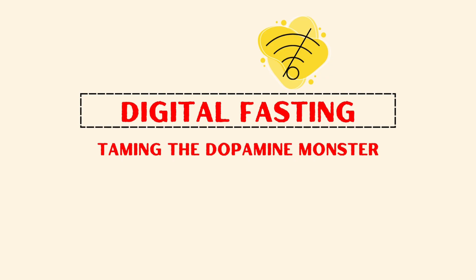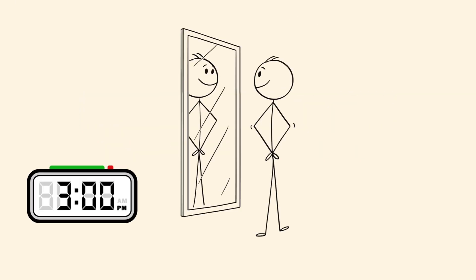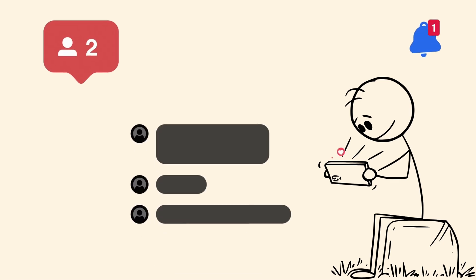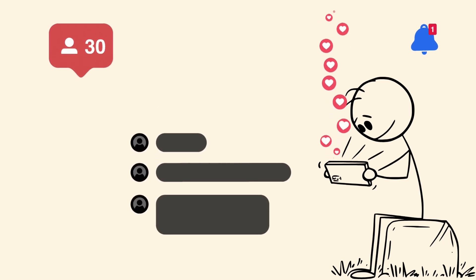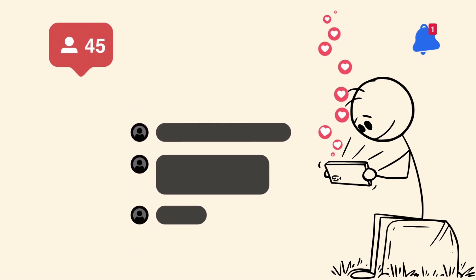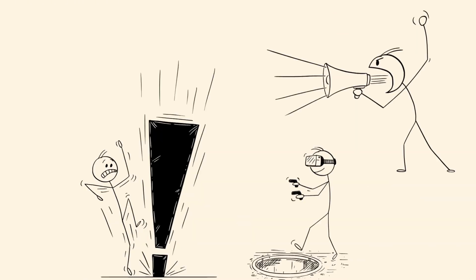Digital fasting. Taming the dopamine monster. Around 3 p.m., Ethan does something rare. He disconnects. No social media. No buzzing notifications. Every ping, buzz, gives your brain a dopamine hit. And over time, it fries your attention span.